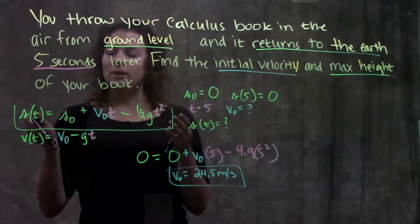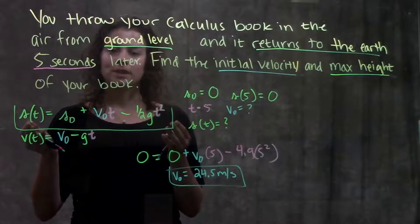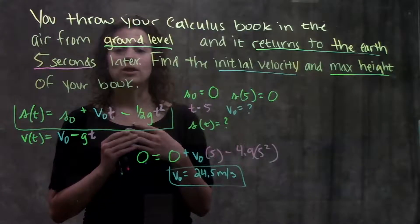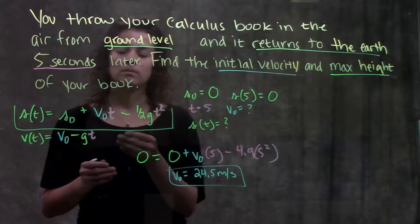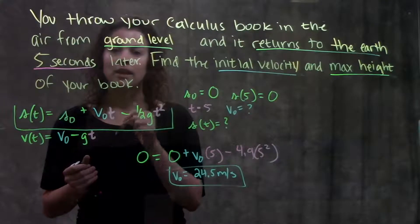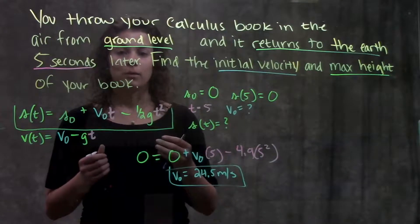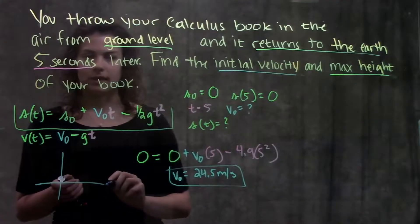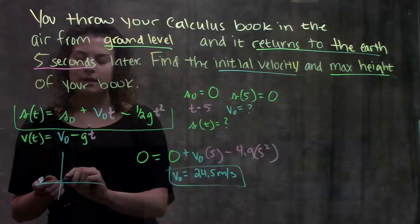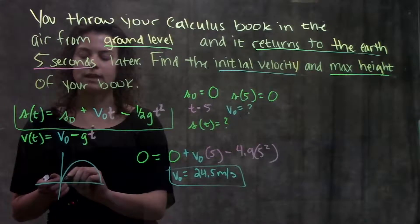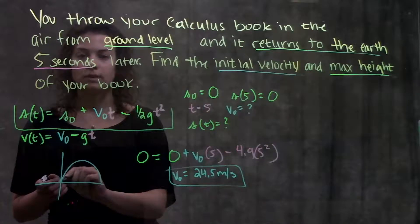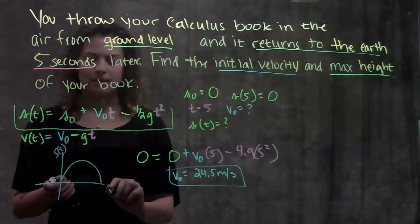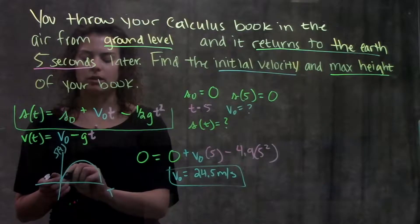So we have that our position function is represented by this equation here. If you notice this equation is the same as a quadratic. It has a t squared term, a t term, and a constant. It's just a regular parabola that we're used to. And I don't know exactly what this parabola looks like but I know it looks something like this. I know that at time zero my position was at zero. My position is on the y-axis and my time is on the x-axis. So at time zero my position was zero.